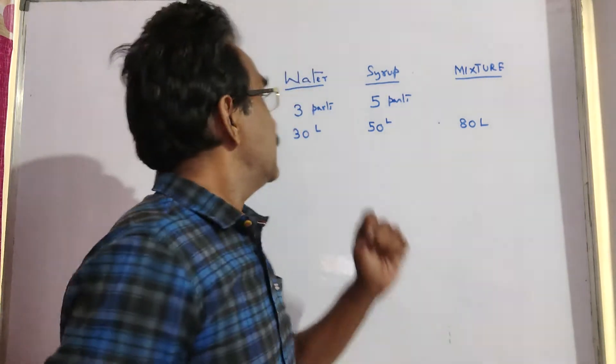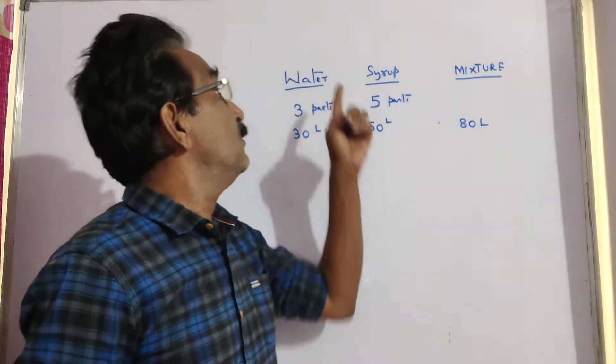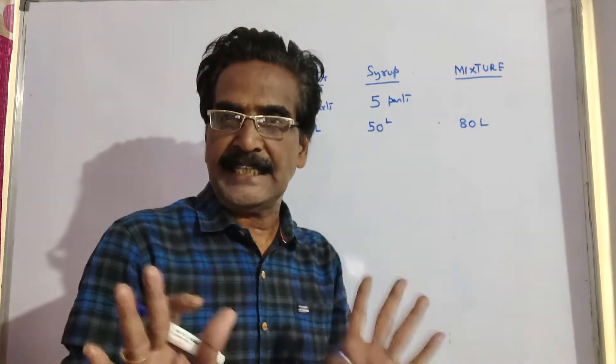See friends, let us say there was 30 liters of water and 50 liters of syrup so that the mixture is 80 liters.